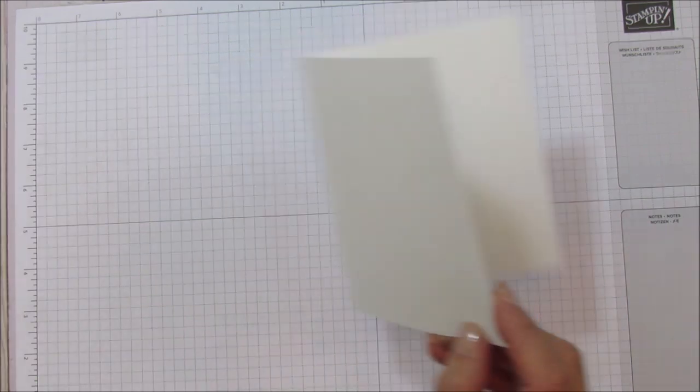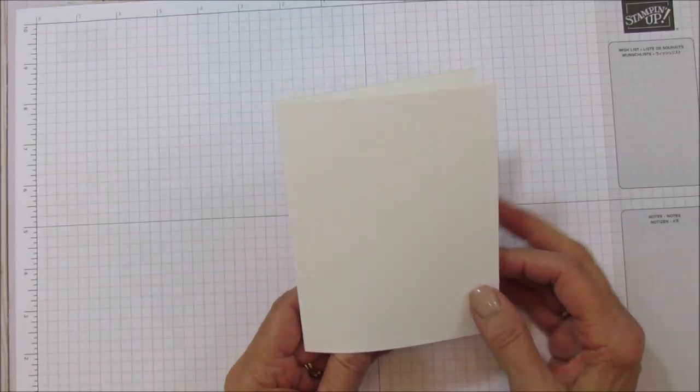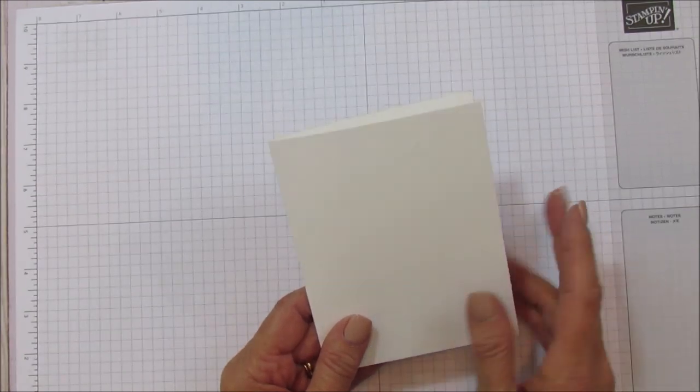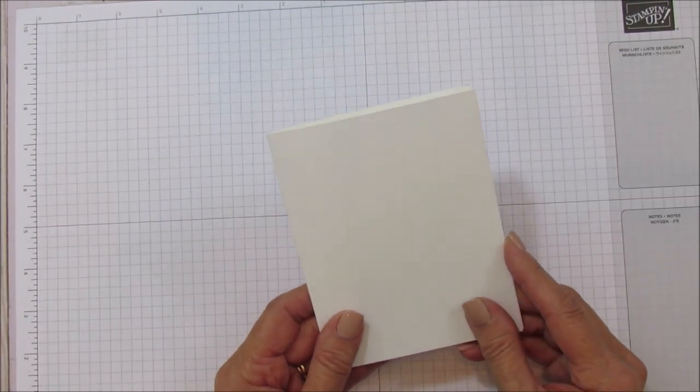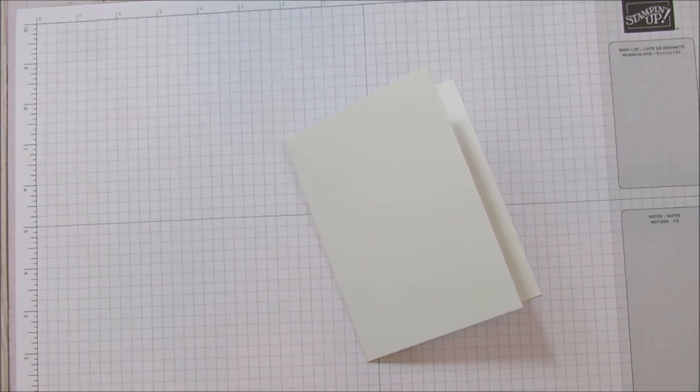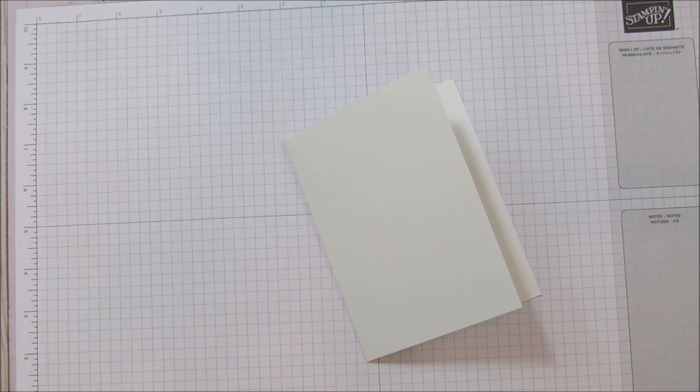Alright, so let's get started. You're going to need a basic card that's five and a half by four and a quarter. This is thick whisper white, which makes it so much easier for card making and makes such a nice quality card.